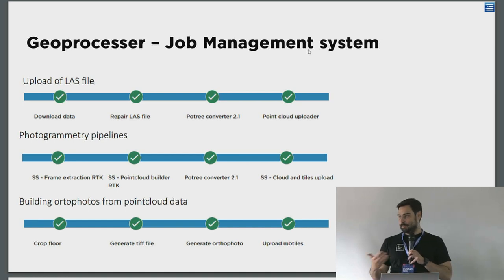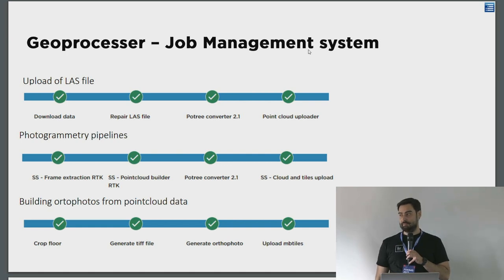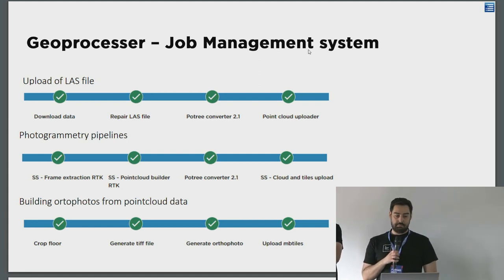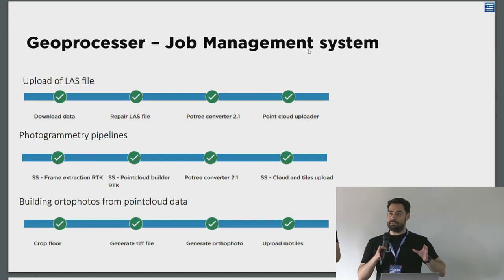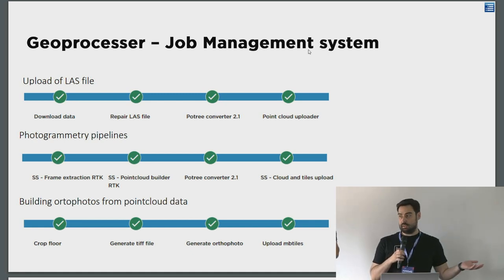Our colleagues building pipelines can write a clean definition, and we already have the infrastructure to run it — it can run on different nodes and has all the capabilities of a job management system. We're hoping to open source it next year; we just need to fix some bugs first. Example pipelines include: upload a LAS file, do a LAS repair, convert to Potree tiles, and put it on our servers; or crop a floor for indoor mapping using PDAL, generate a GeoTIFF and orthophoto, make MBTiles, and publish on the server. We have many such pipelines for all our data workflows.